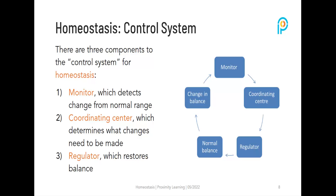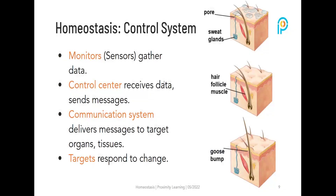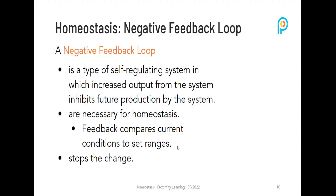There are three components to the control system for homeostasis: monitor, coordinating center, and regulator. The monitor detects the change from normal range. The coordinating center determines what changes need to be made. The regulator restores balance. The monitors are the sensors — they gather the data. The control center receives the data and sends messages. The communication system delivers the messages to target organs and tissues, and the targets respond to change.